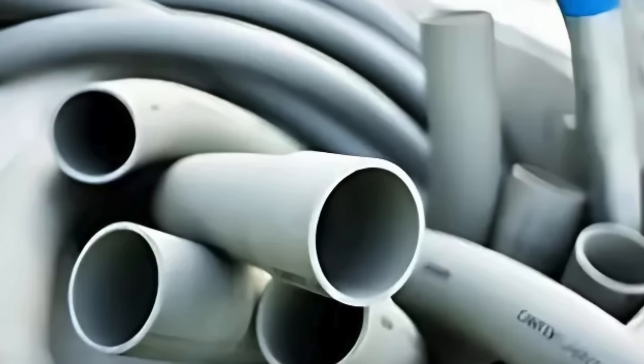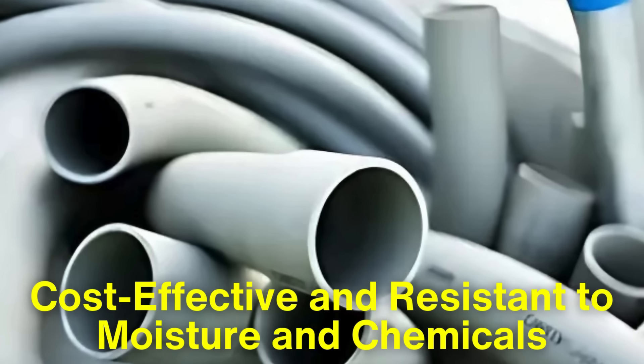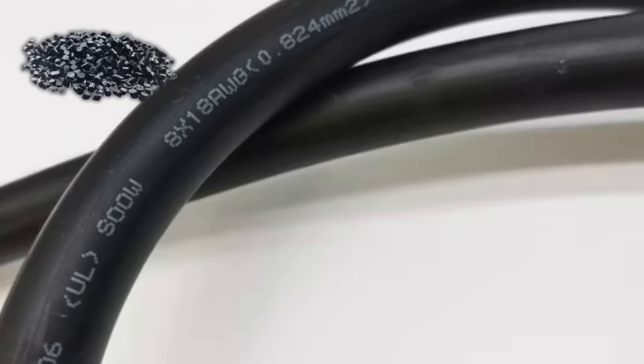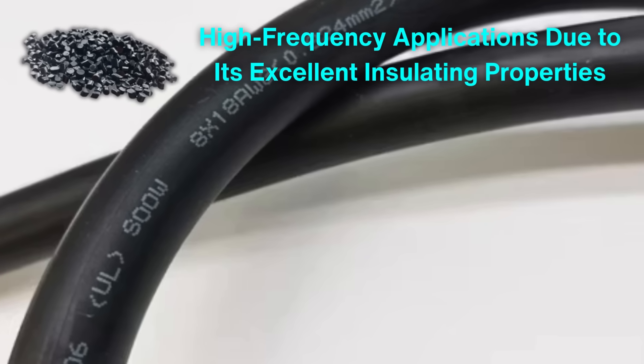For instance, PVC is widely used because it's cost-effective and resistant to moisture and chemicals, while polyethylene is preferred for high-frequency applications due to its excellent insulating properties.